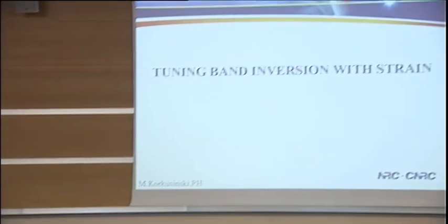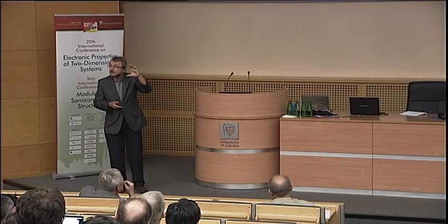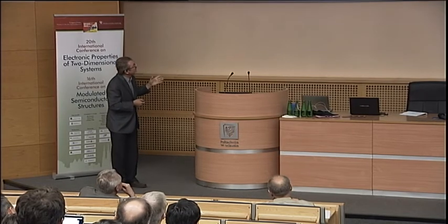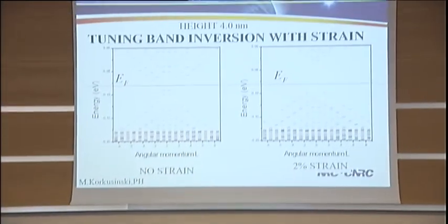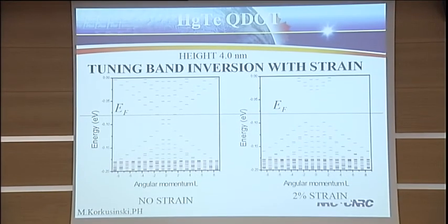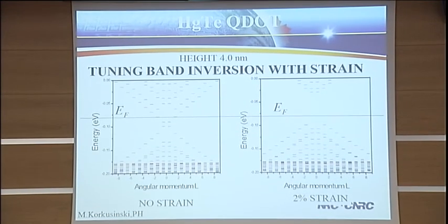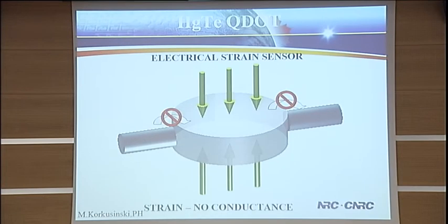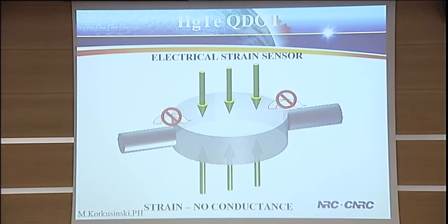What can you do with this? We were tuning the properties of the structure as a function of height, but you can also tune this with strain. With no strain you have a state in the gap; if you apply strain, you have no state in the gap. So in the normal state, before applying strain, you have current running through because electrons move through these surface states — and if you apply strain, you turn the current off. So you have a nanoscale electrical strain sensor. You can put it on the wing of an aircraft and read electrically what's going on.